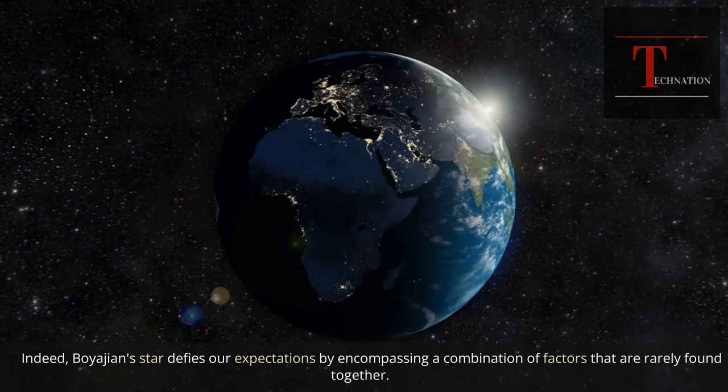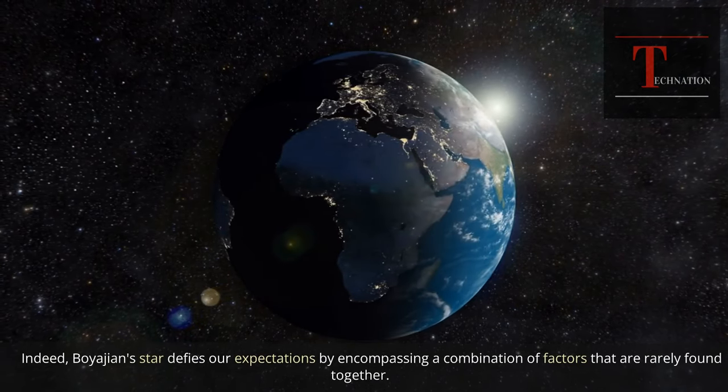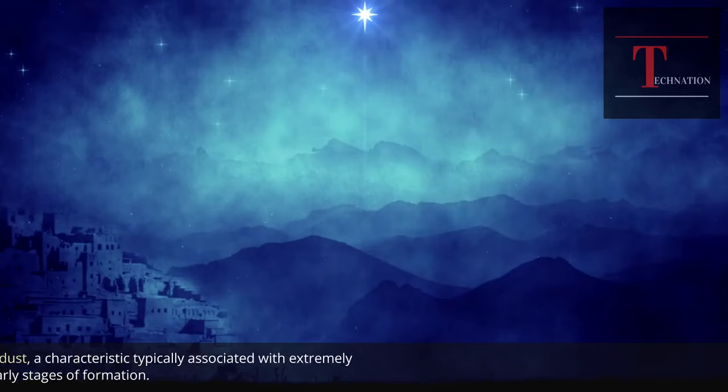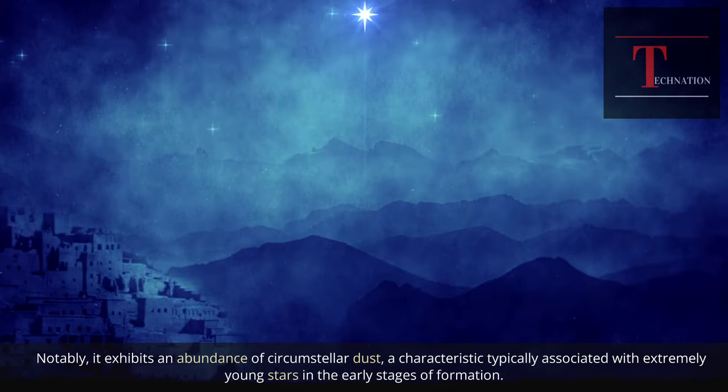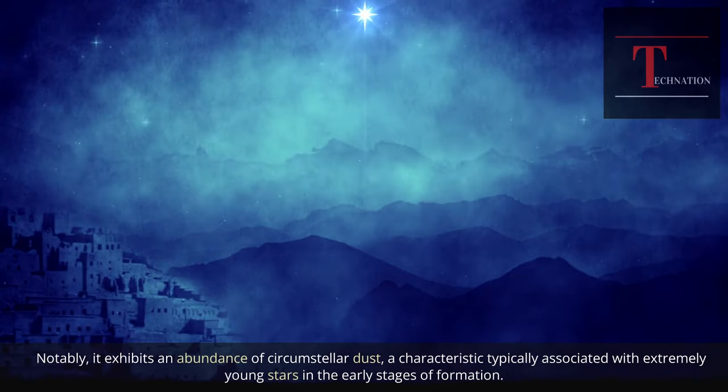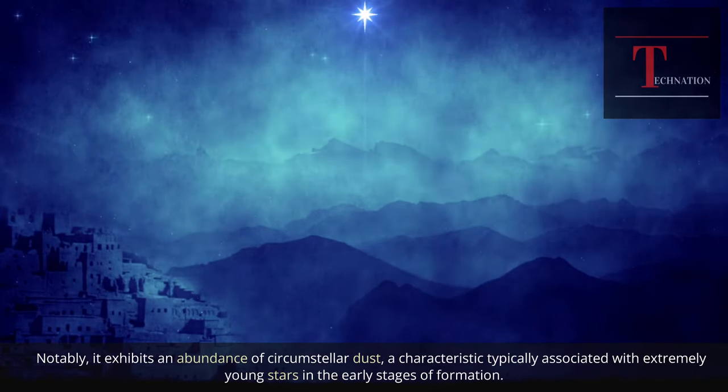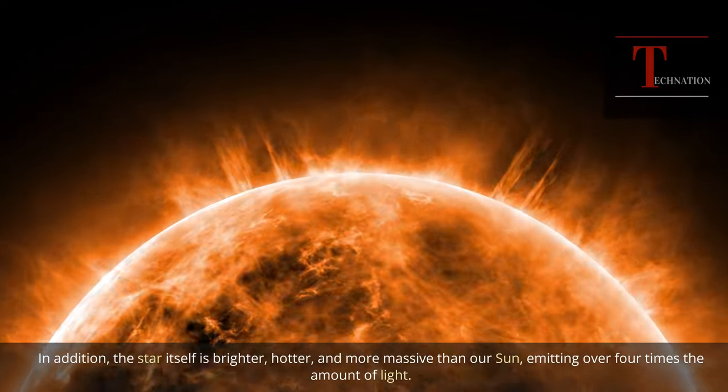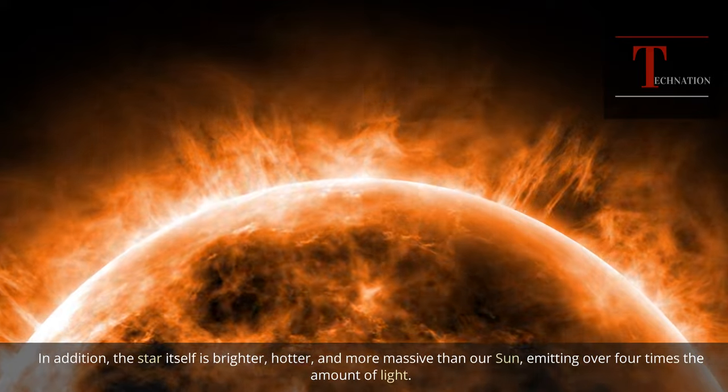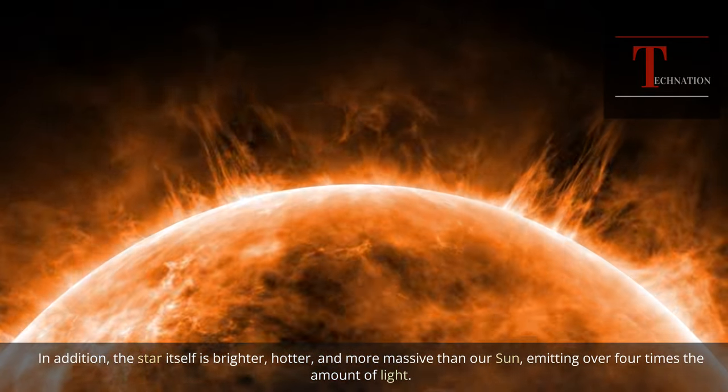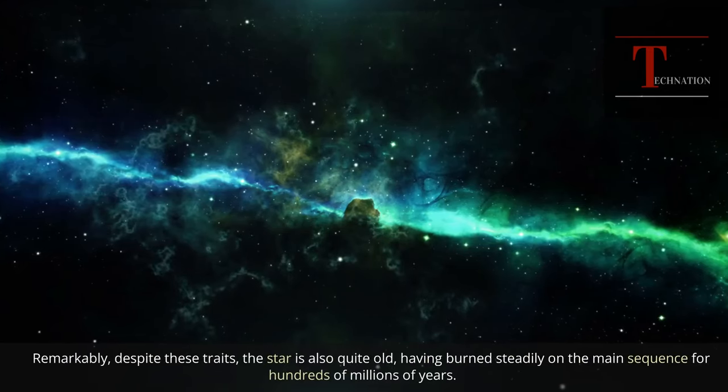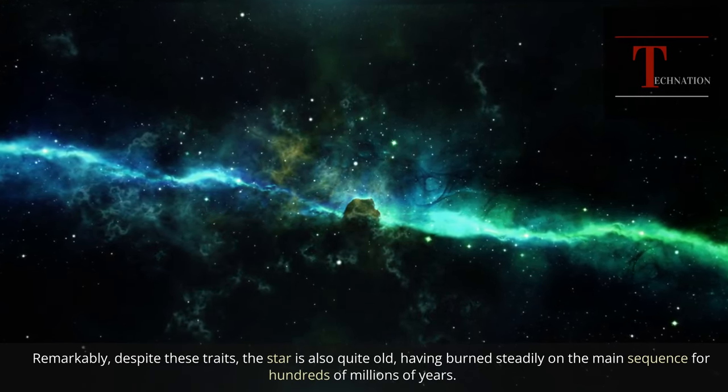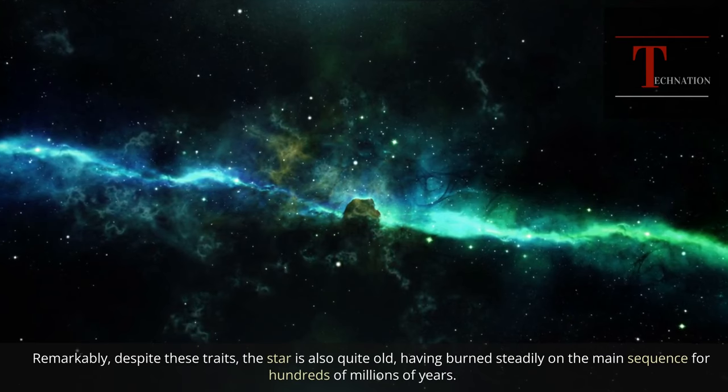Indeed, Boyajian star defies our expectations by encompassing a combination of factors that are rarely found together. Notably, it exhibits an abundance of circumstellar dust, a characteristic typically associated with extremely young stars in the early stages of formation. In addition, the star itself is brighter, hotter, and more massive than our sun, emitting over four times the amount of light. Remarkably, despite these traits, the star is also quite old, having burned steadily on the main sequence for hundreds of millions of years.